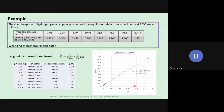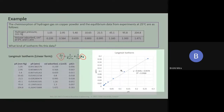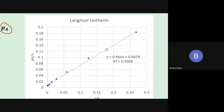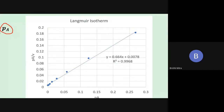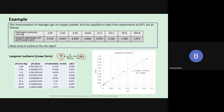We plot P_A/V on the y-axis versus partial pressure P_A on the x-axis. This is not a perfect straight line, but fitting a straight line through the data gives an R² value of 0.9968. R² equal to 1 would be a perfect straight line, so anything closest to that indicates a reasonably decent fit. We can say that this set of data fits the Langmuir isotherm reasonably well.